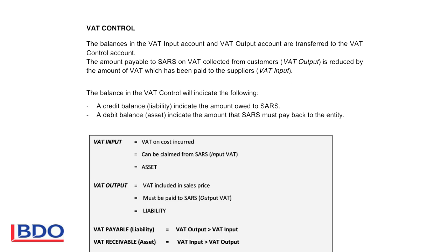If we look at the VAT control account, the control account is where you will take the balance of your VAT input account and the balance of your VAT output account and transfer the balancing figures to the VAT control account. The amount payable to SARS on VAT collected from your customers is reduced by the amount that you can claim back from SARS. The two amounts are deducted from each other to determine the balancing figure in the VAT control account.